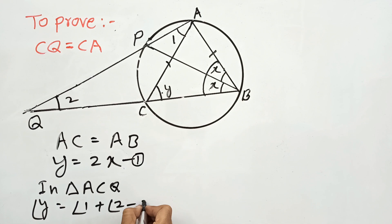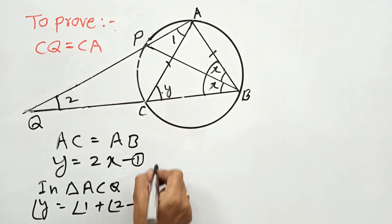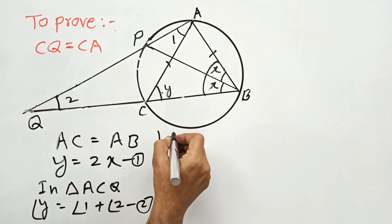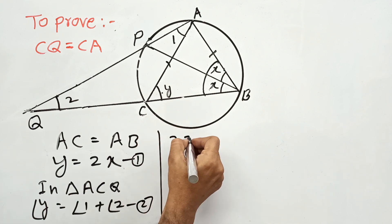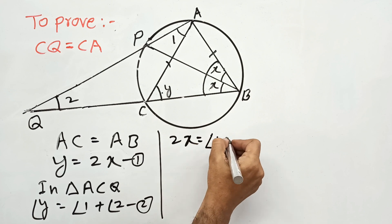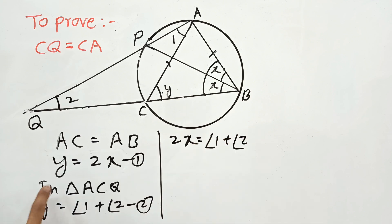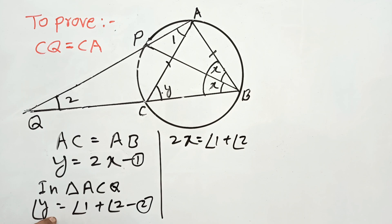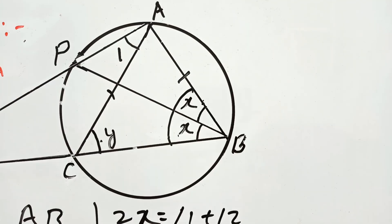Using equations 1 and 2, we substitute 2X in place of Y. So 2X is equal to angle 1 plus angle 2.